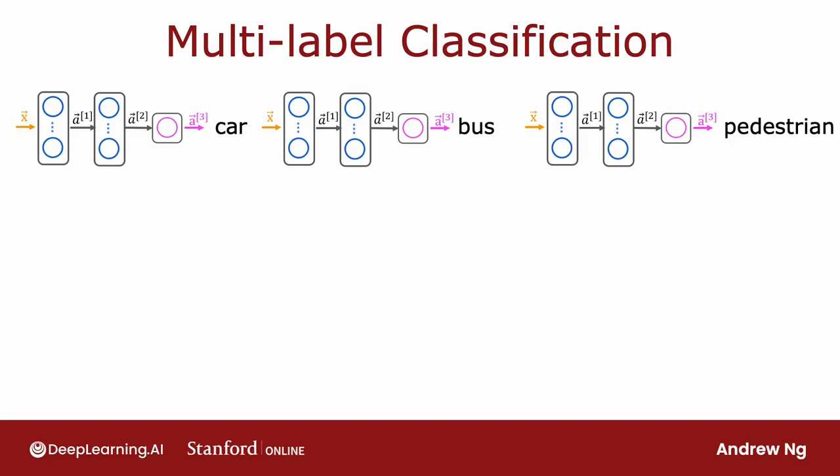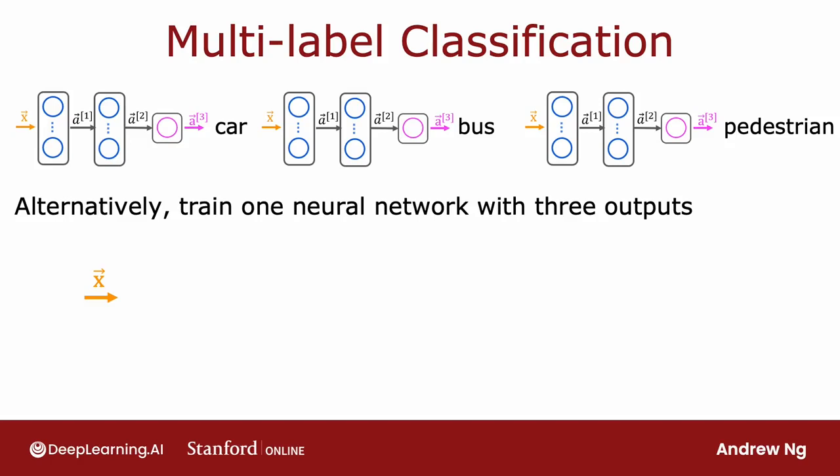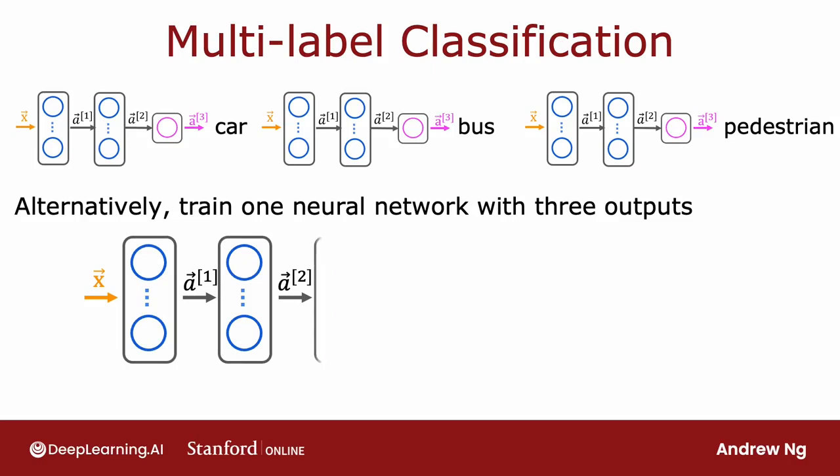But there's another way to do this, which is to train a single neural network to simultaneously detect all three of cars, buses, and pedestrians. That's your input X, first hidden layer outputs A1, second hidden layer outputs A2, and then the final output layer in this case will have three output neurons and will output A3, which is going to be a vector of three numbers.